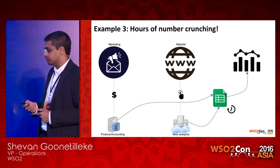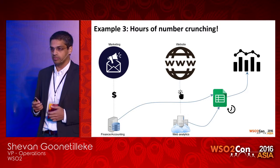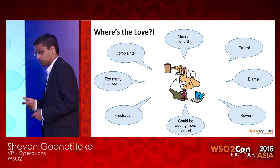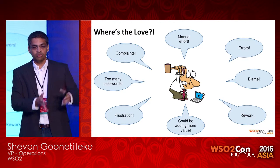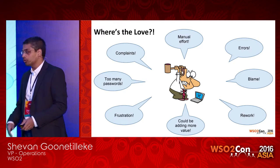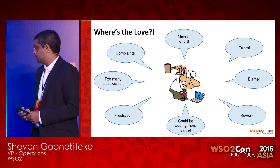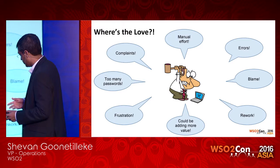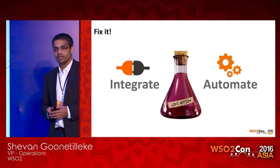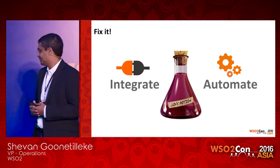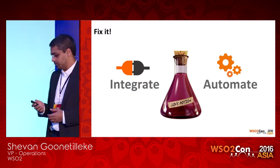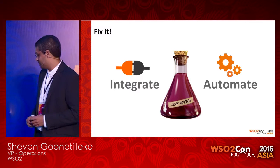All these things start having an impact on users and the team. Where's the love then? You'll have people always complaining, spending too much effort, lots of manual work copying data between systems. If it's heavily manual, there will be errors, rework, blame, and complaints. People say, 'I could be adding much more value.' There's frustration and motivation issues. So what do you do? You need to fix this — everyone wants a bit of love. If people are beginning to hate your IT infrastructure, you need to find some kind of love potion.